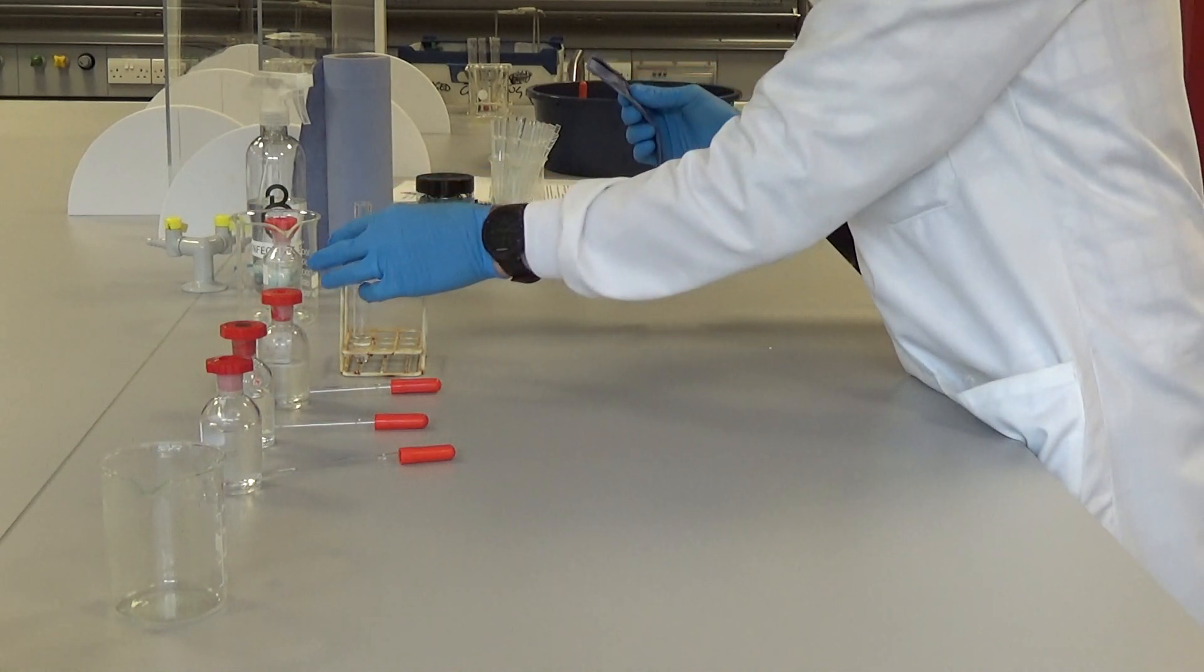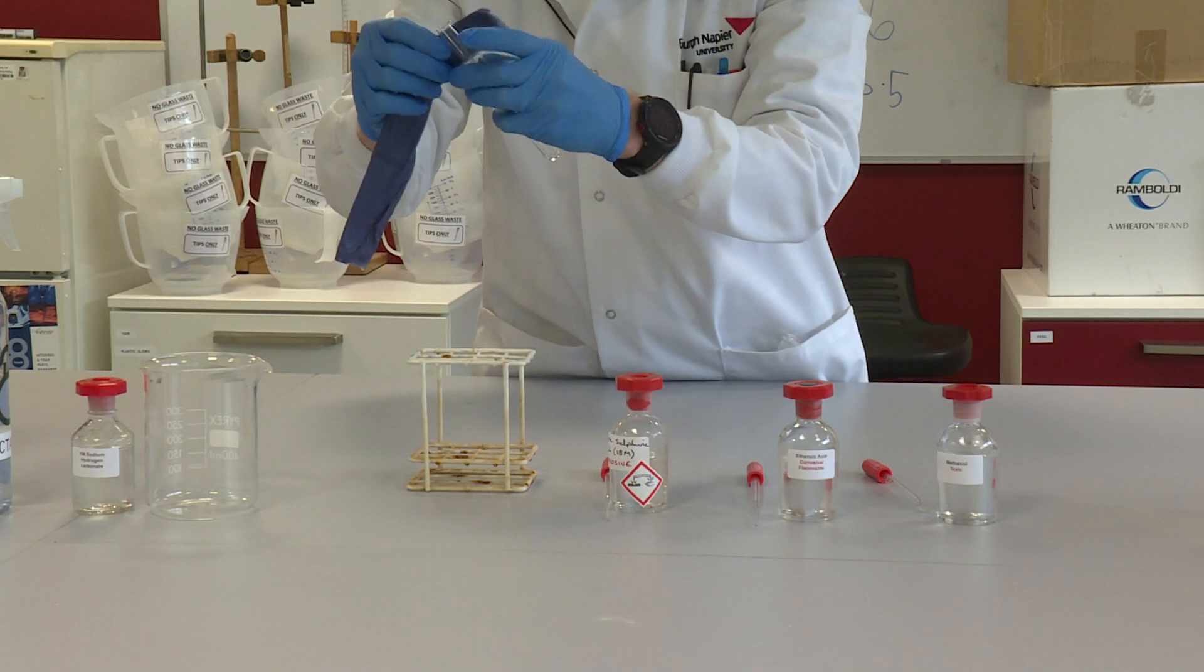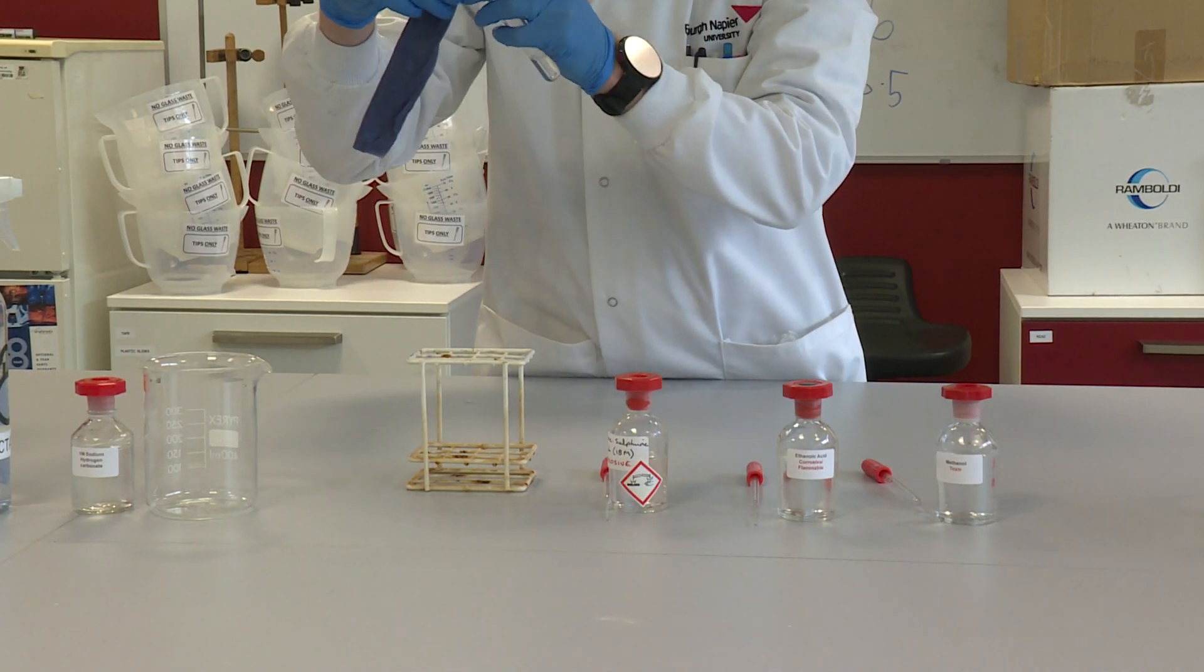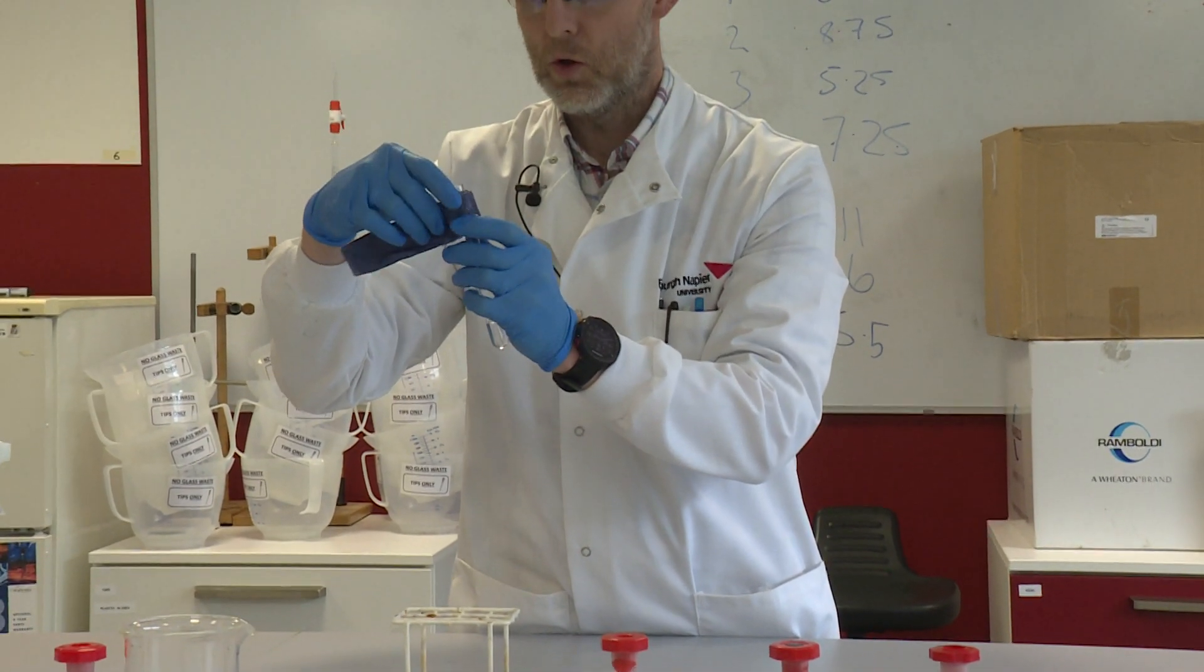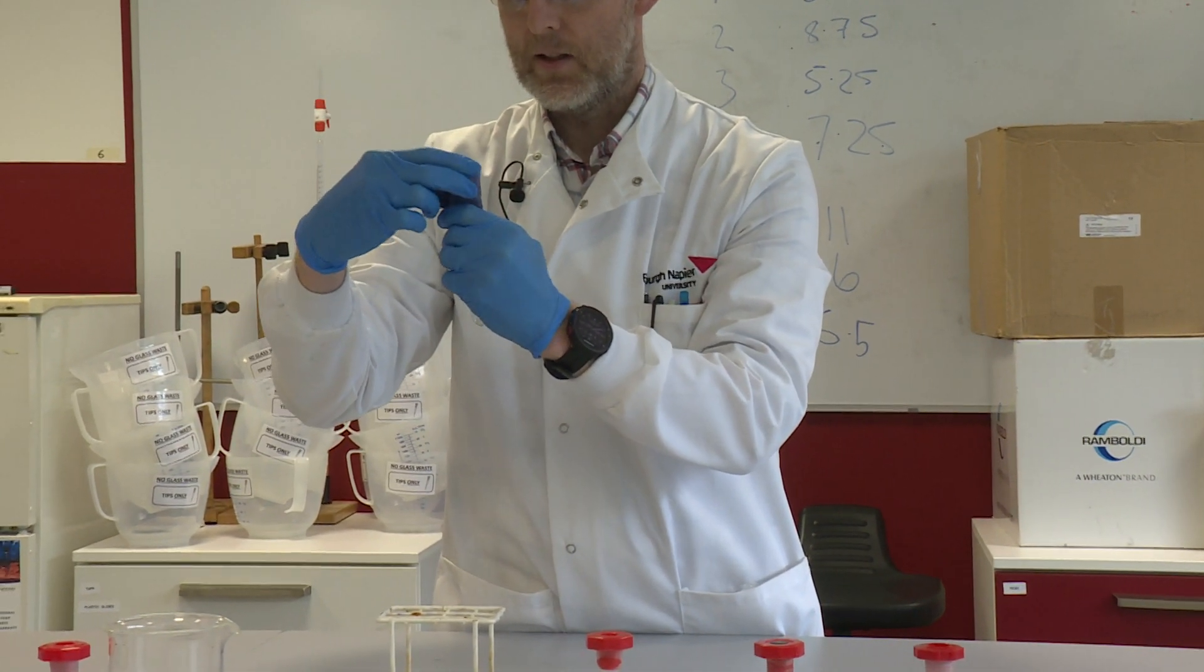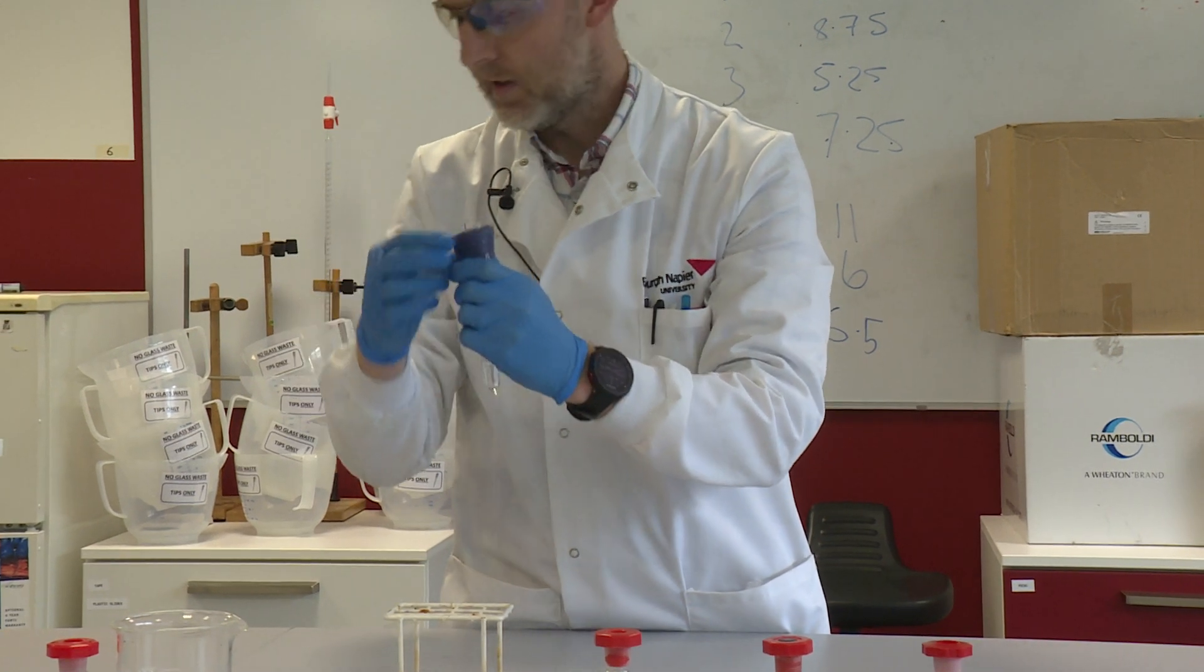What I'm going to do is just use a wet paper towel. I'm just going to wrap a wet paper towel around the neck of the test tube, which acts as a condenser. It keeps the neck of the test tube cold and will stop any vapor escaping.